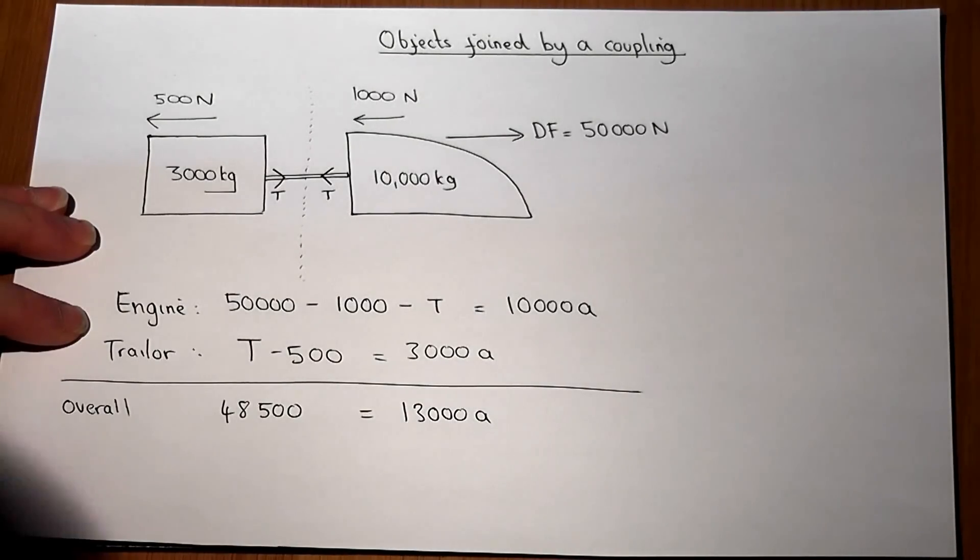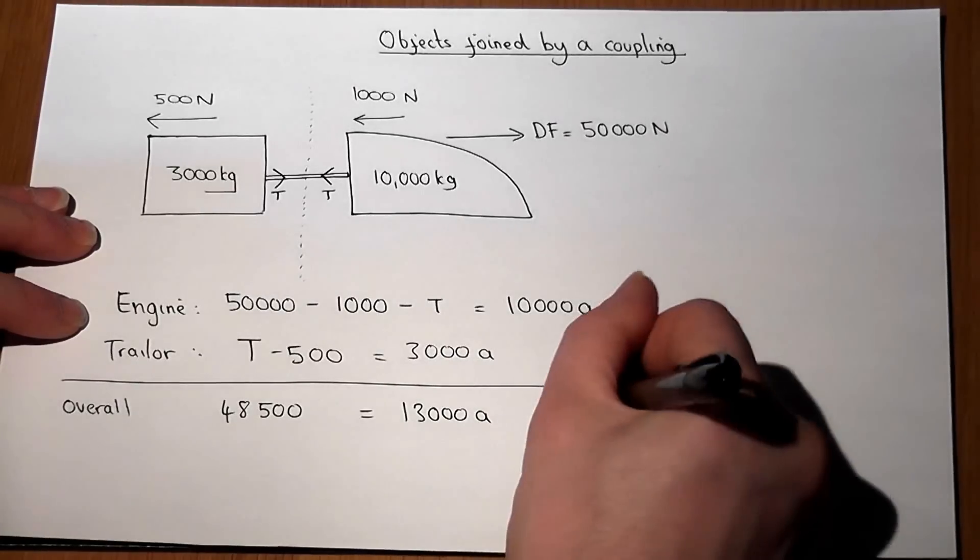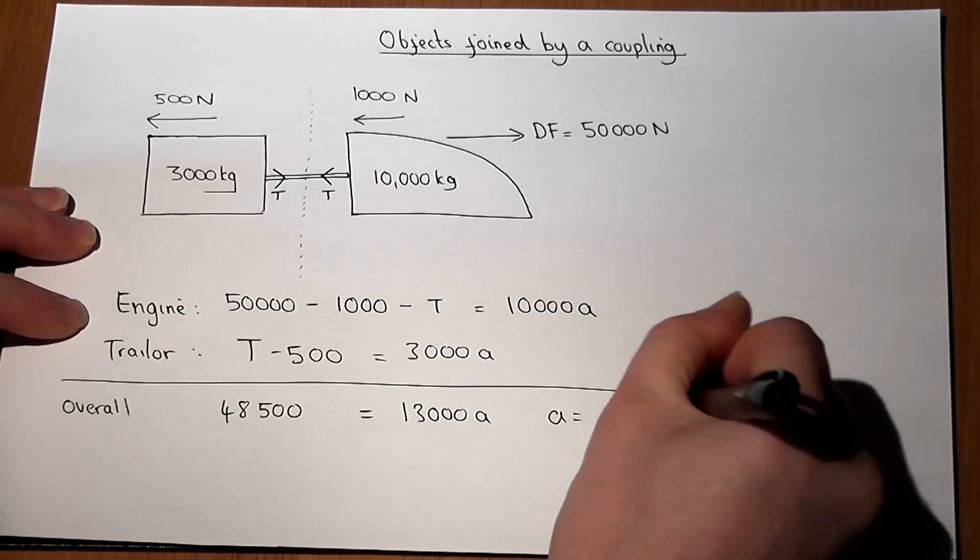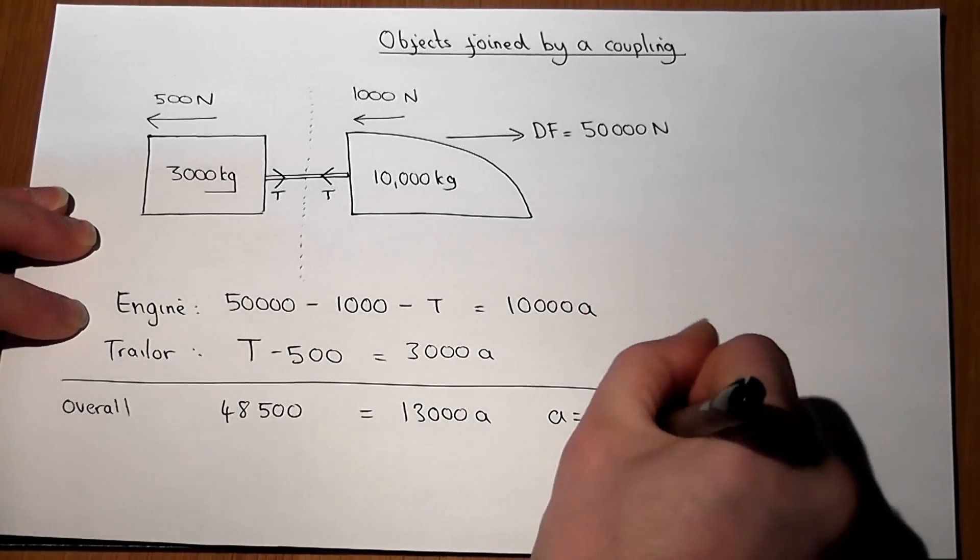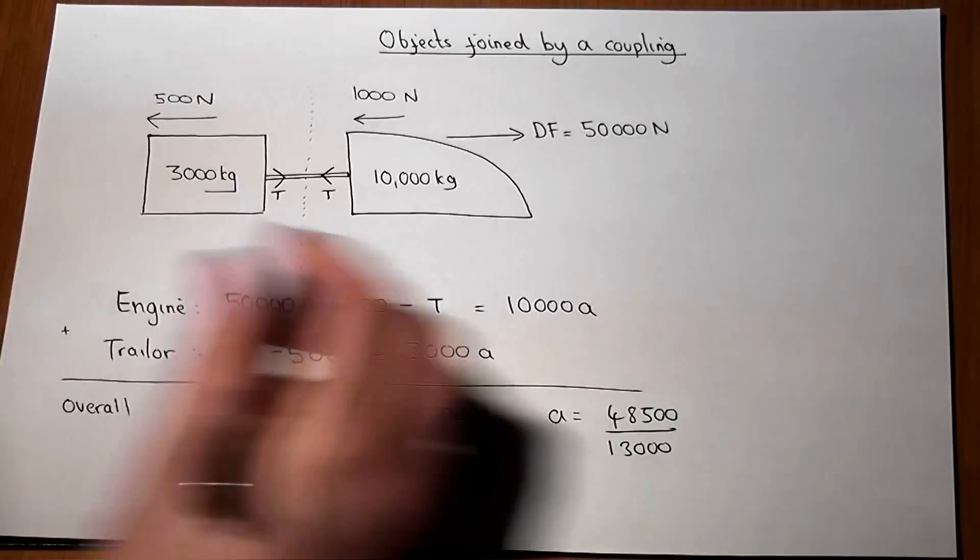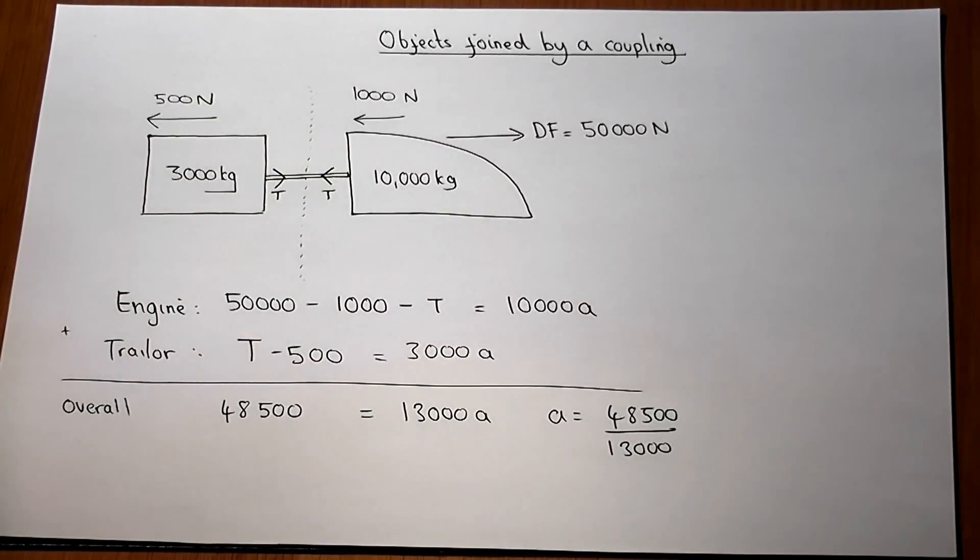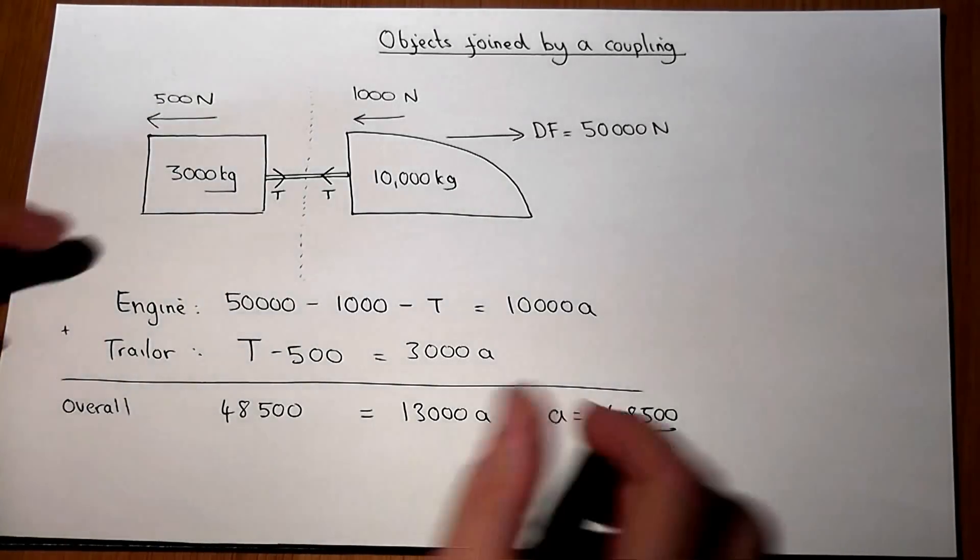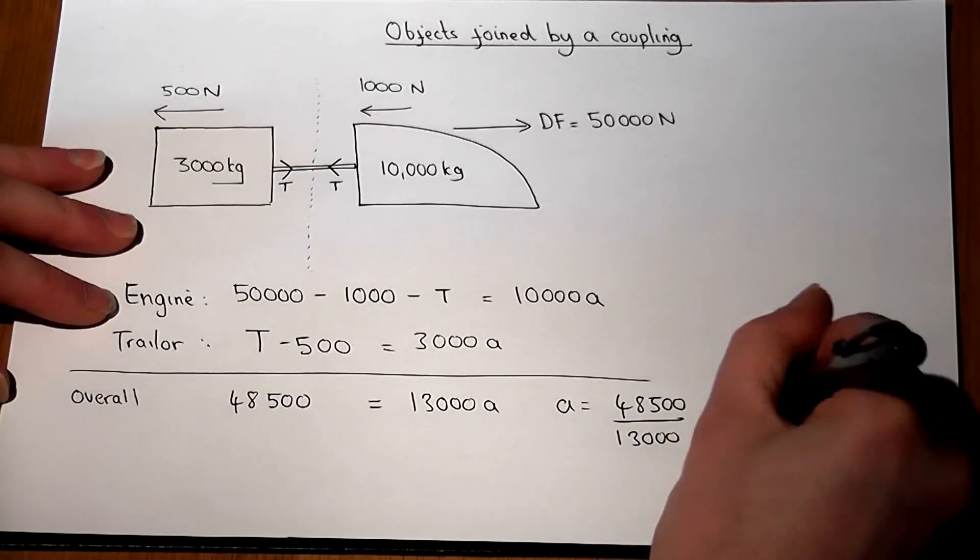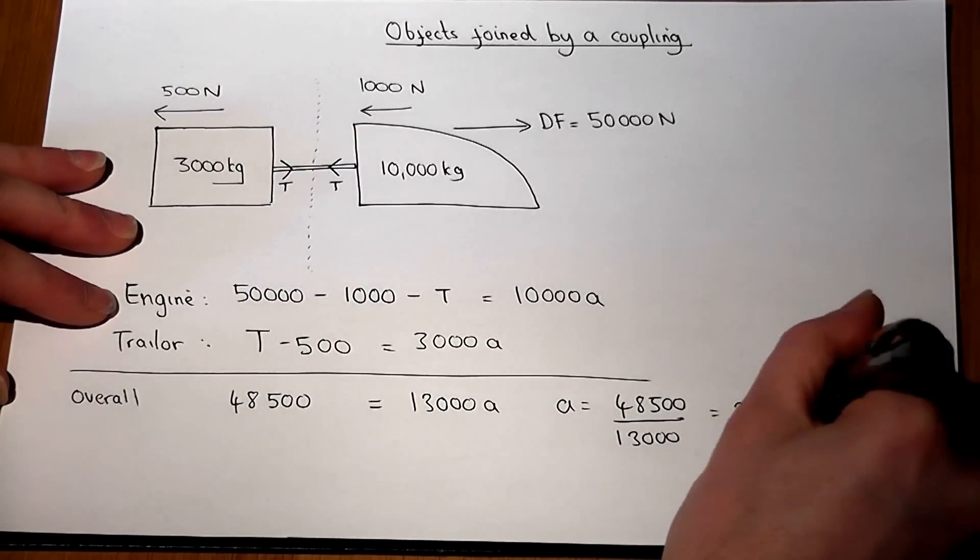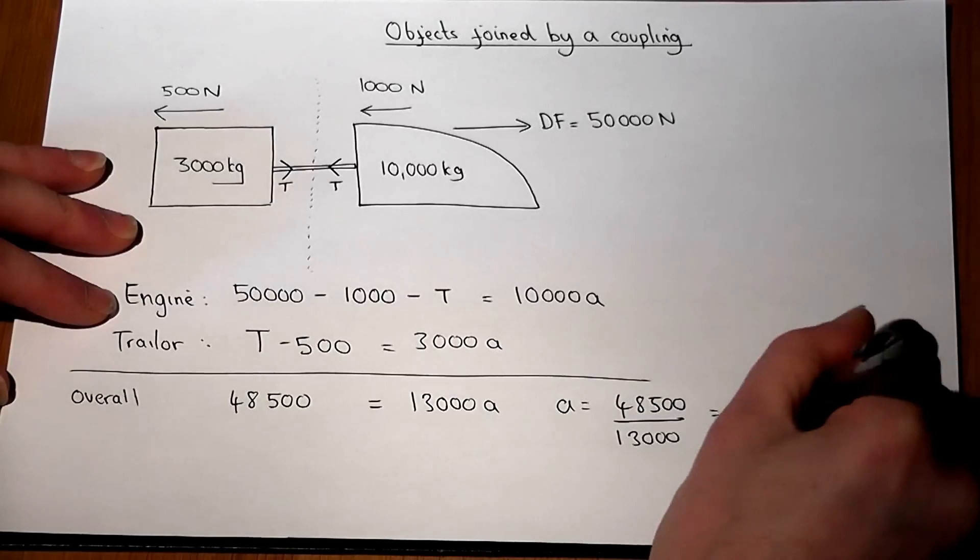So I've therefore managed to get rid of the T's, they've cancelled out. So A will equal 48,500 all over 13,000, which if we work out gives us acceleration of 3.73 metres per second squared.